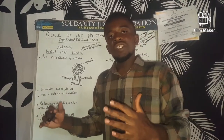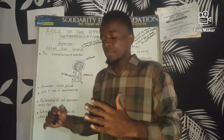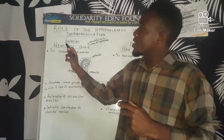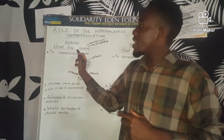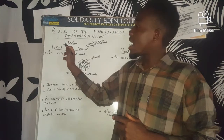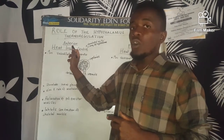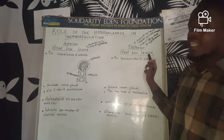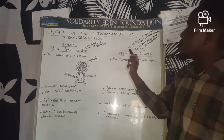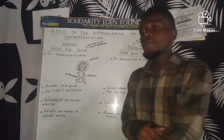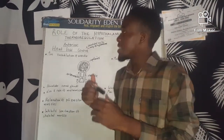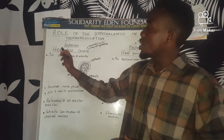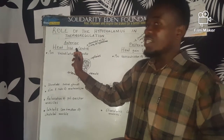The thermoregulatory center is where temperature is controlled, and it is divided into two parts. We have the heat loss center, which is found in the anterior hypothalamus, and the heat gain center, which is found in the posterior hypothalamus. We are going to start with the heat loss center.